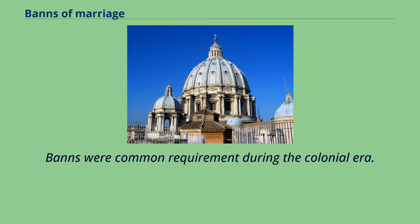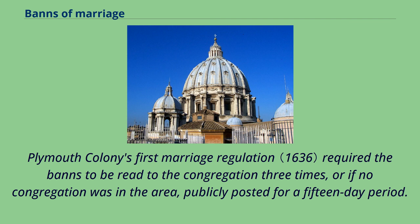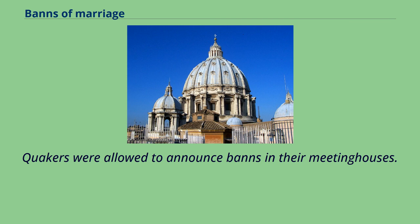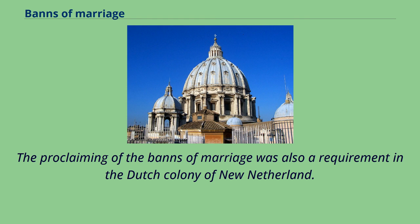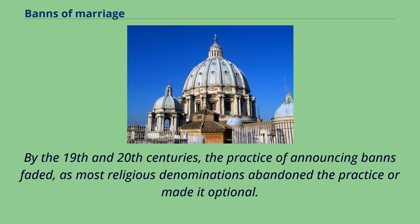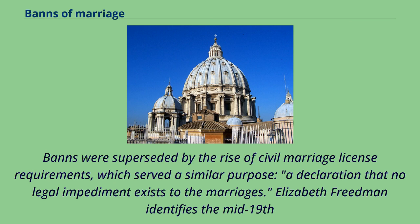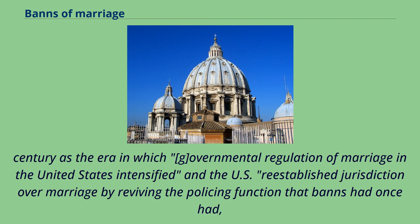Banns were a common requirement during the colonial era. Plymouth Colony's first marriage regulation required the banns to be read to the congregation three times, or if no congregation was in the area, publicly posted for a 15-day period. Quakers were allowed to announce banns in their meeting houses. Noncompliance with the banns procedure carried a serious fine in the 17th century, which could be imposed upon the groom or minister. The proclaiming of the banns of marriage was also a requirement in the Dutch colony of New Netherland. By the 19th and 20th centuries, the practice of announcing banns faded, as most religious denominations abandoned the practice or made it optional. Banns were superseded by the rise of civil marriage license requirements, which served a similar purpose: a declaration that no legal impediment exists to the marriage. Elizabeth Friedman identifies the mid-19th century as the era in which governmental regulation of marriage in the United States intensified, and the U.S. re-established jurisdiction over marriage by reviving the policing function that banns had once had, developing a series of prenuptial tests that would determine the fitness of the couple to marry.